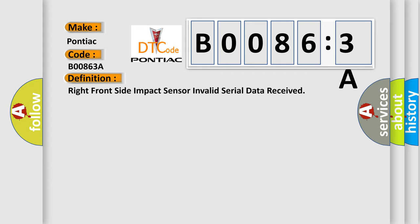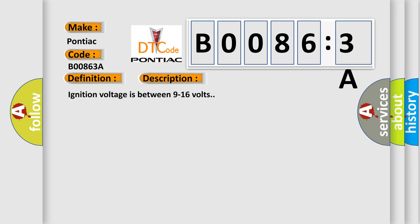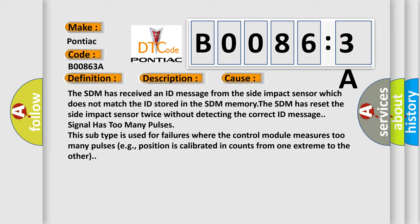And now this is a short description of this DTC code. Ignition voltage is between 9 to 16 volts. This diagnostic error occurs most often in these cases: The SDM has received an ID message from the side impact sensor which does not match the ID stored in the SDM memory. The SDM has reset the side impact sensor twice without detecting the correct ID message. Signal has too many pulses. This subtype is used for failures where the control module measures too many pulses, for example, position is calibrated in counts from one extreme to the other.